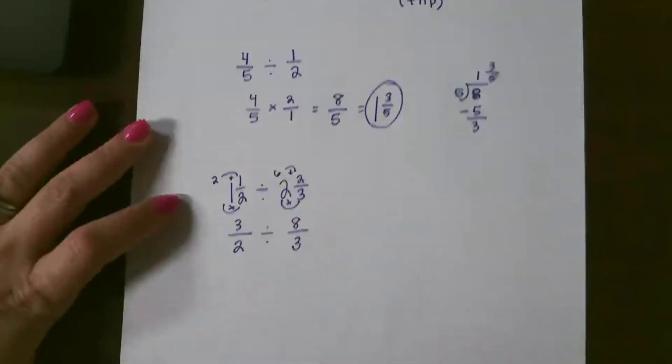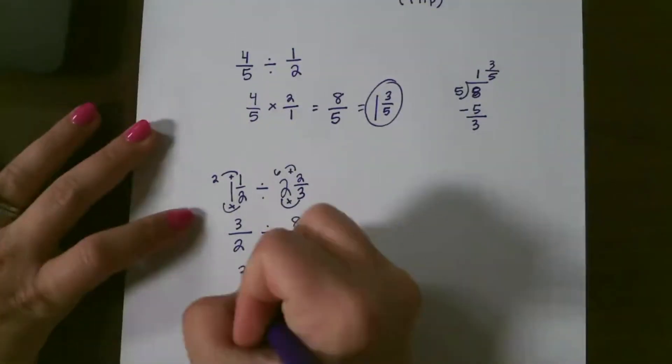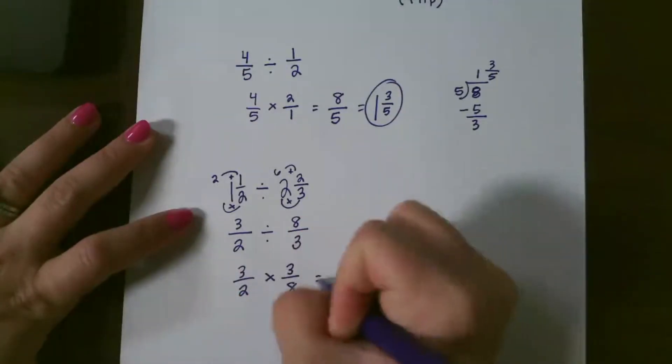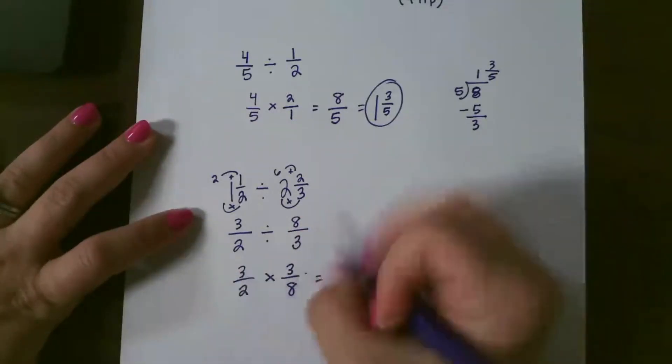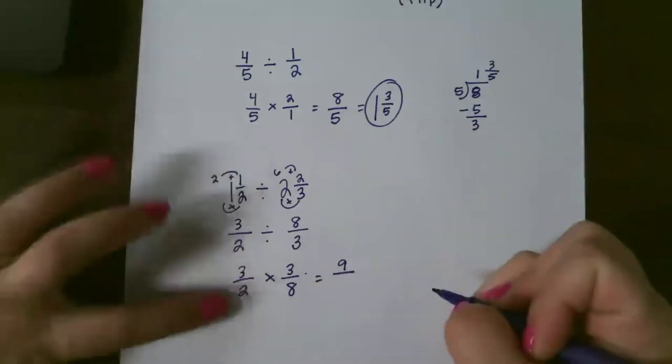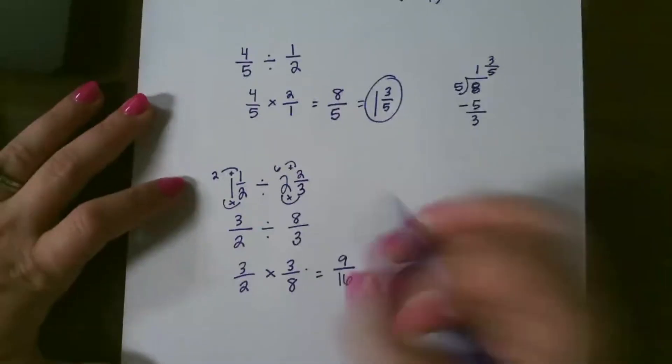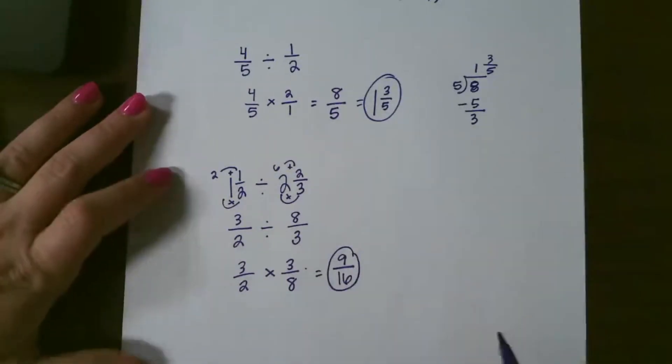So then, now we can follow the division rules. Keep that first fraction and multiply by the reciprocal. So multiply straight across. 3 times 3 is 9. 2 times 8 is 16. This cannot be simplified, so that would be our final answer.